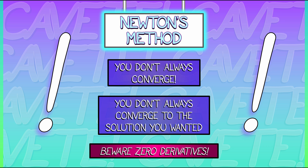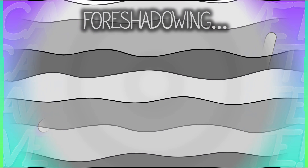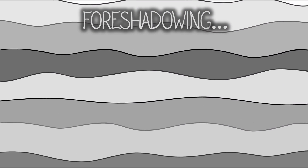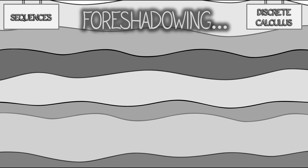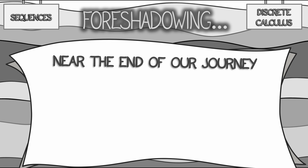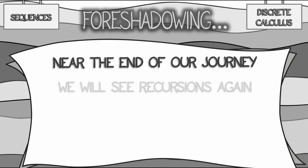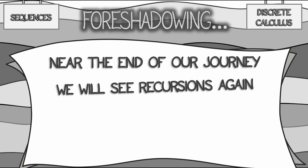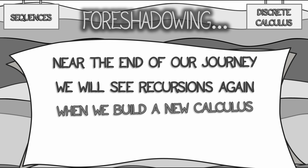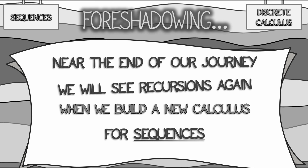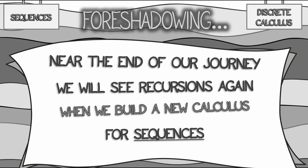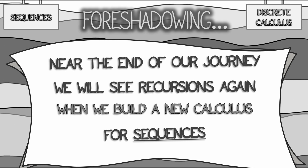That's it for Newton's method. This is a really cool, great example of iterated linearization. But we're not done with this type of recursive system—in the future, near the end of our journey, we will see recursions again when we build a new calculus, a discrete calculus for sequences. That won't come until Volume 4, so don't worry about it.